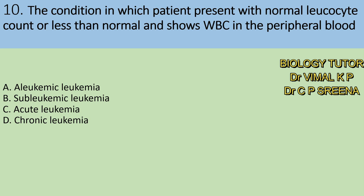Tenth question: the condition in which a patient presents with normal leukocyte count or less than normal and shows immature WBC in the peripheral blood is — A. Aleukemic Leukemia, B. Subleukemic Leukemia, C. Acute Leukemia, D. Chronic Leukemia. Here answer is A — Aleukemic Leukemia.